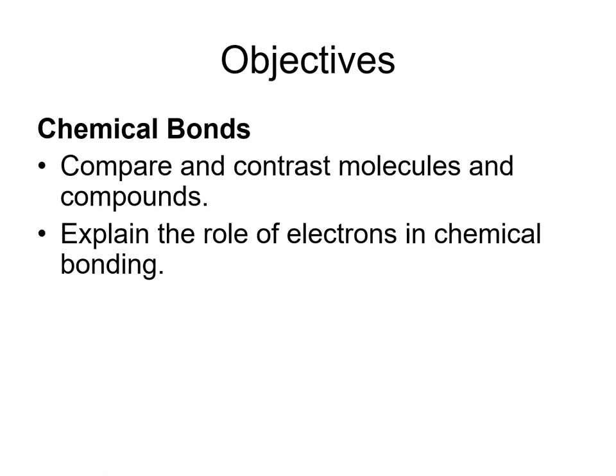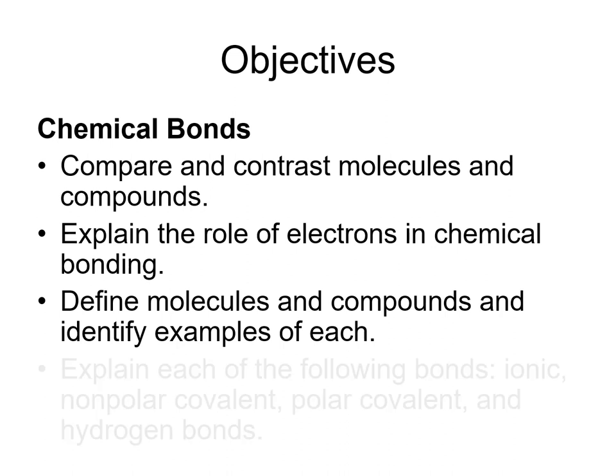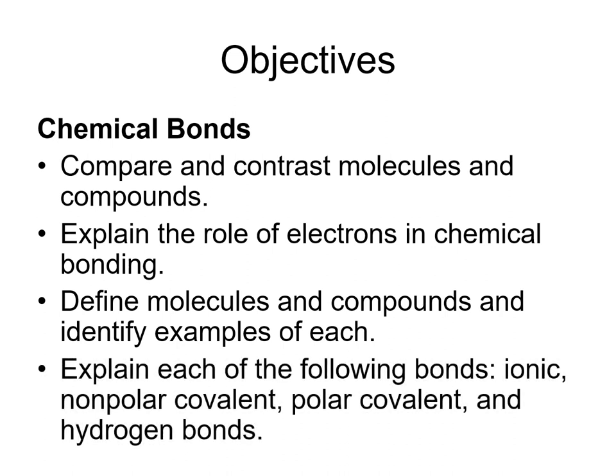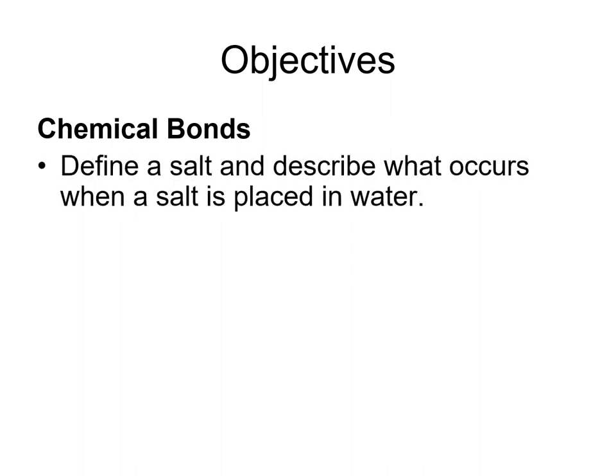Before we end, let's review the objectives of the screencast: compare and contrast molecules and compounds; explain the role of electrons in chemical bonding; define molecules and compounds and identify examples of each; explain each of the following bonds — ionic, nonpolar covalent, polar covalent, and hydrogen bonds; and define a salt and describe what occurs when a salt is placed in water.